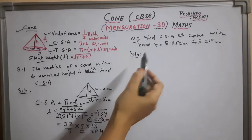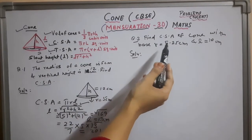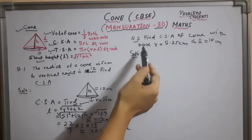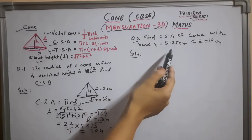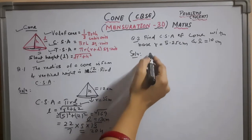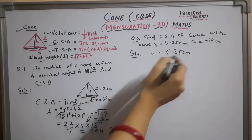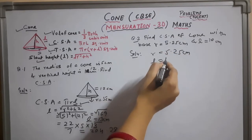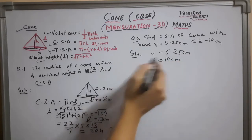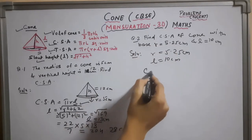My next problem is we have to find curve surface area where base radius r is given and l is given. So r is 5.25 cm and slant height is 10 cm. Putting these values directly in curve surface area formula, CSA is equal to pi r l, so it will be 22 by 7 into r 5.25 into 10.